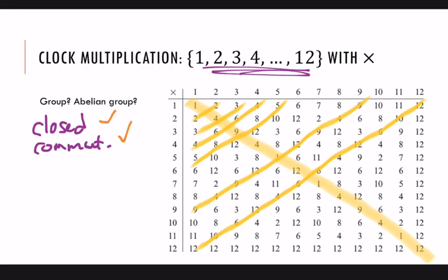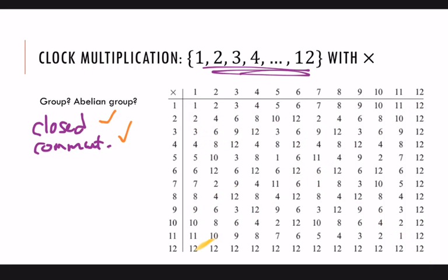Closed, commutative. Identity. So we need rows and columns that match. Here's a column, and here's a row. Follow those back. One is the identity. So sometimes it is a normal one or a zero, but sometimes it's something else. So it doesn't mean that it has to be a one, but in this case it is. So yes, the identity is one.